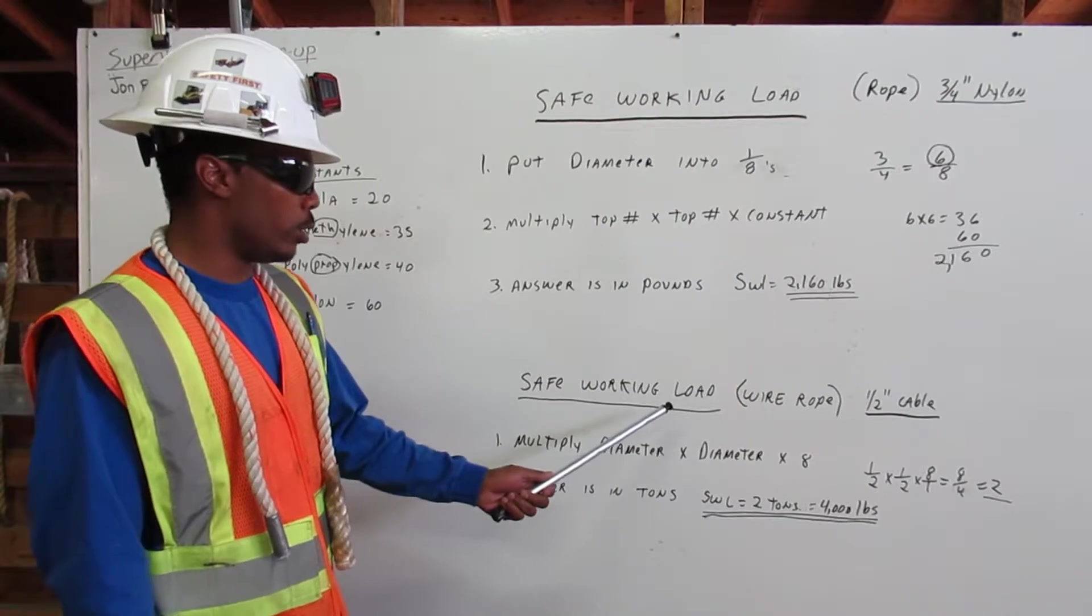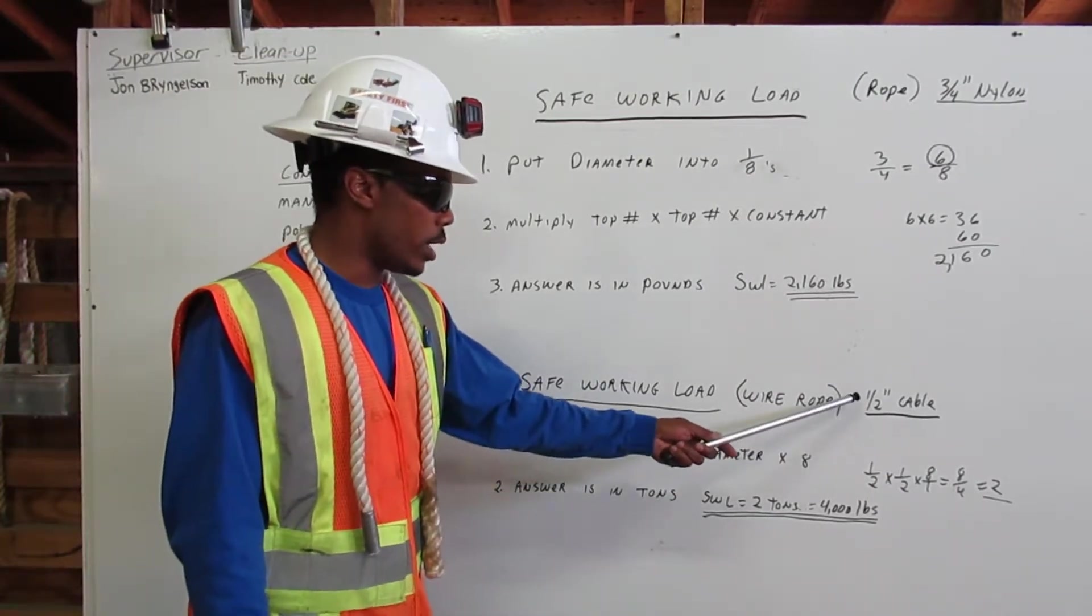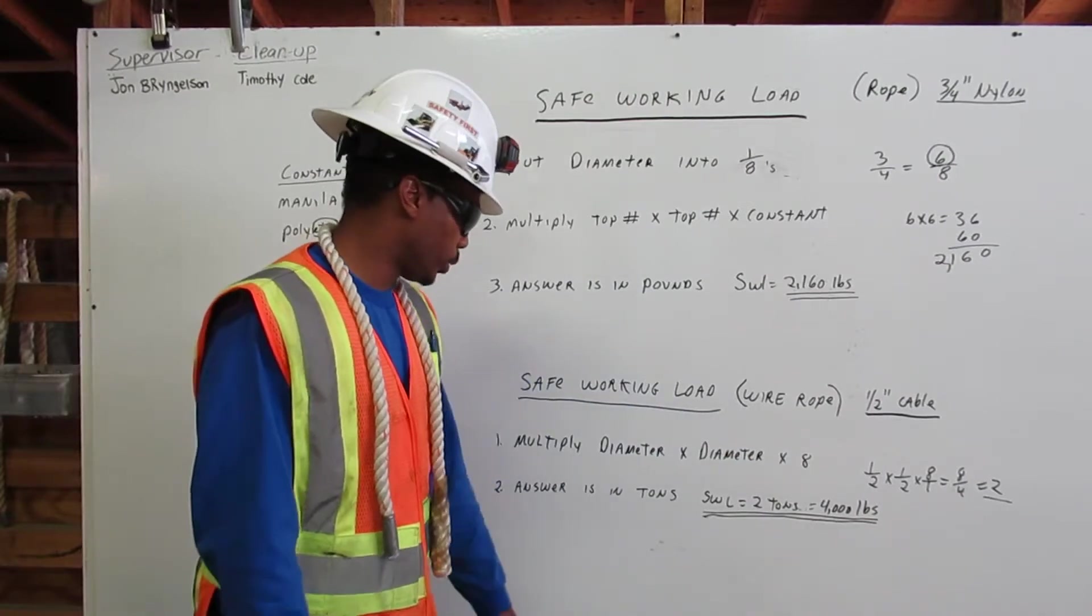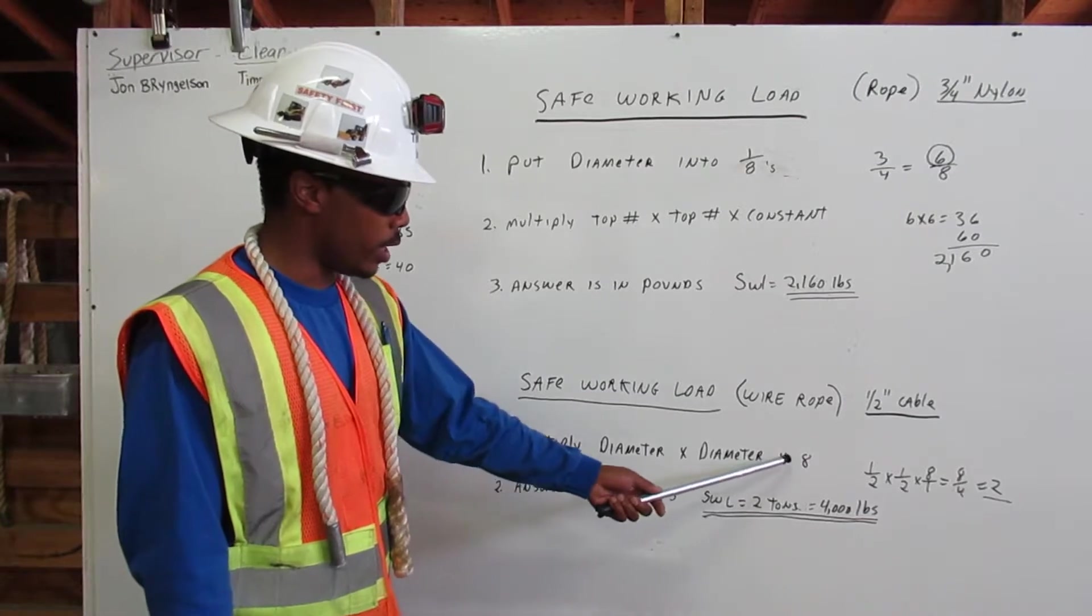Now, safe working load for wire rope. In this example, we're going to use a half inch cable. So, first, multiply diameter times diameter times 8.